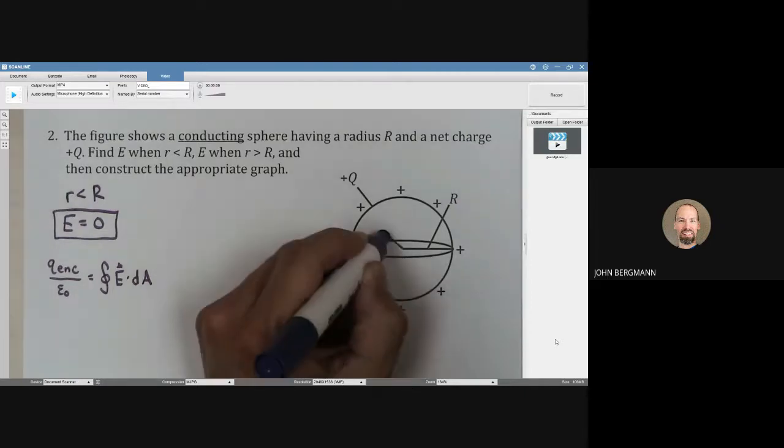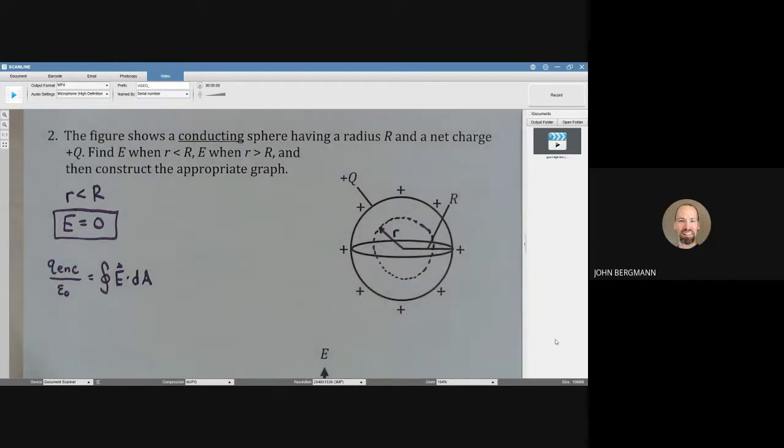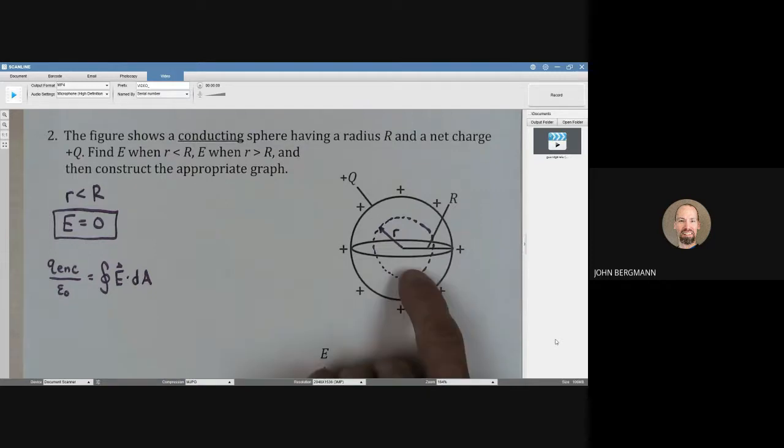That means that we would need a Gaussian sphere that has a radius that's smaller than the radius of the cannonball. And what is the net charge that's enclosed in there?